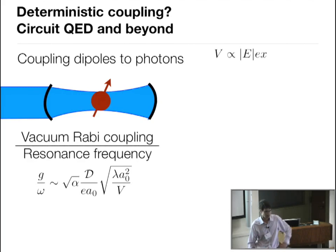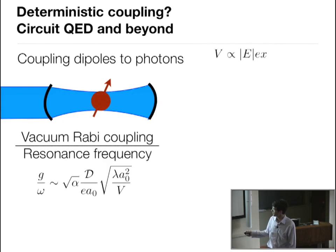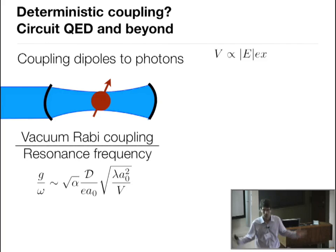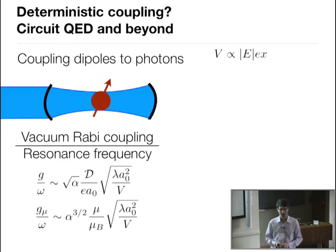The ratio involves the dipole moment to a Bohr dipole — charge times Bohr radius — and the square root of the Bohr radius squared divided by the mode volume: the volume in which the electromagnetic field is found. For magnetic dipole transitions, common in atomic physics, you get essentially the same formula but with an additional factor of fine structure constant, representing that magnetic dipole is higher order in the QED perturbation series, and the magnetic dipole over a Bohr magneton.